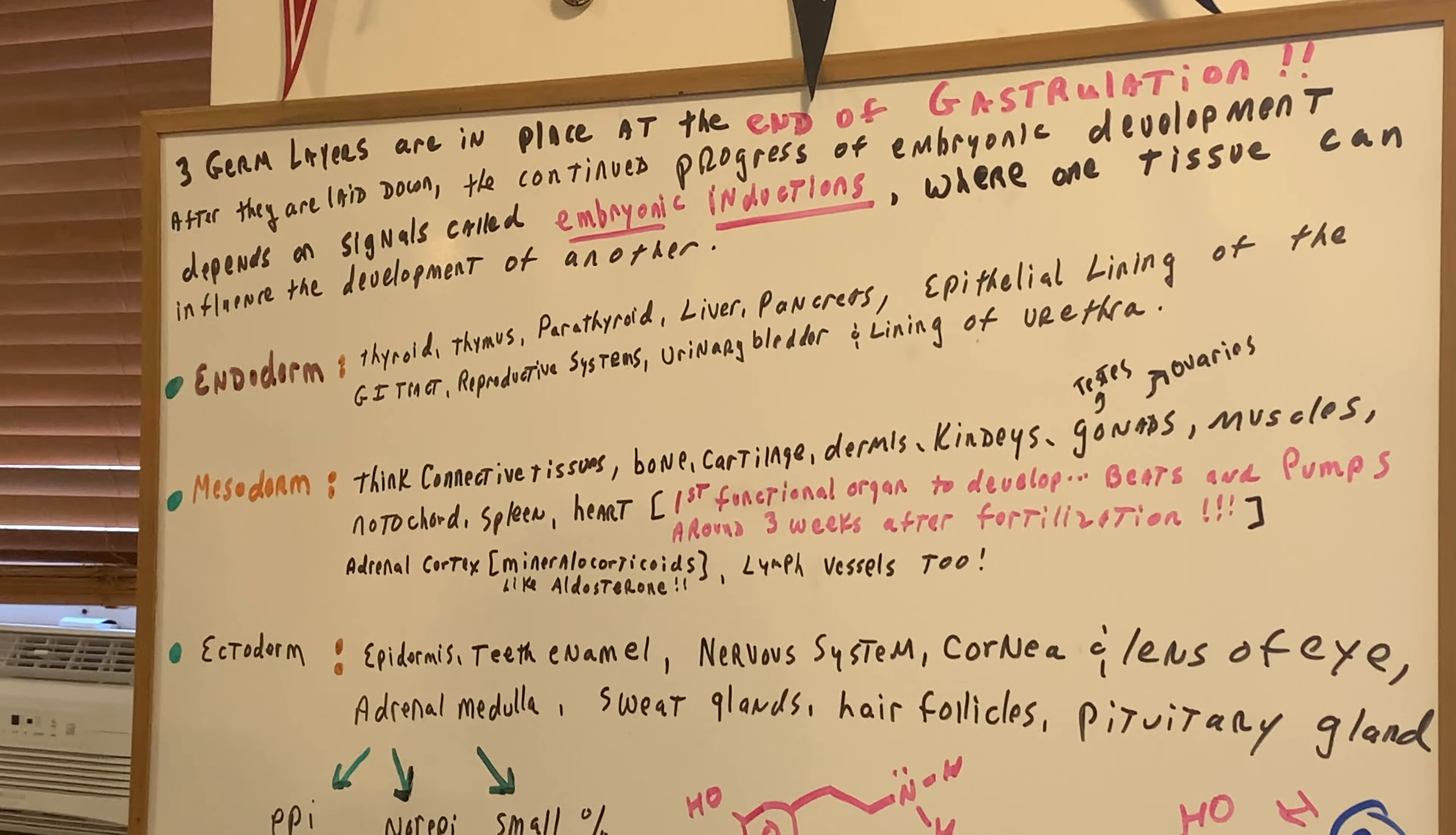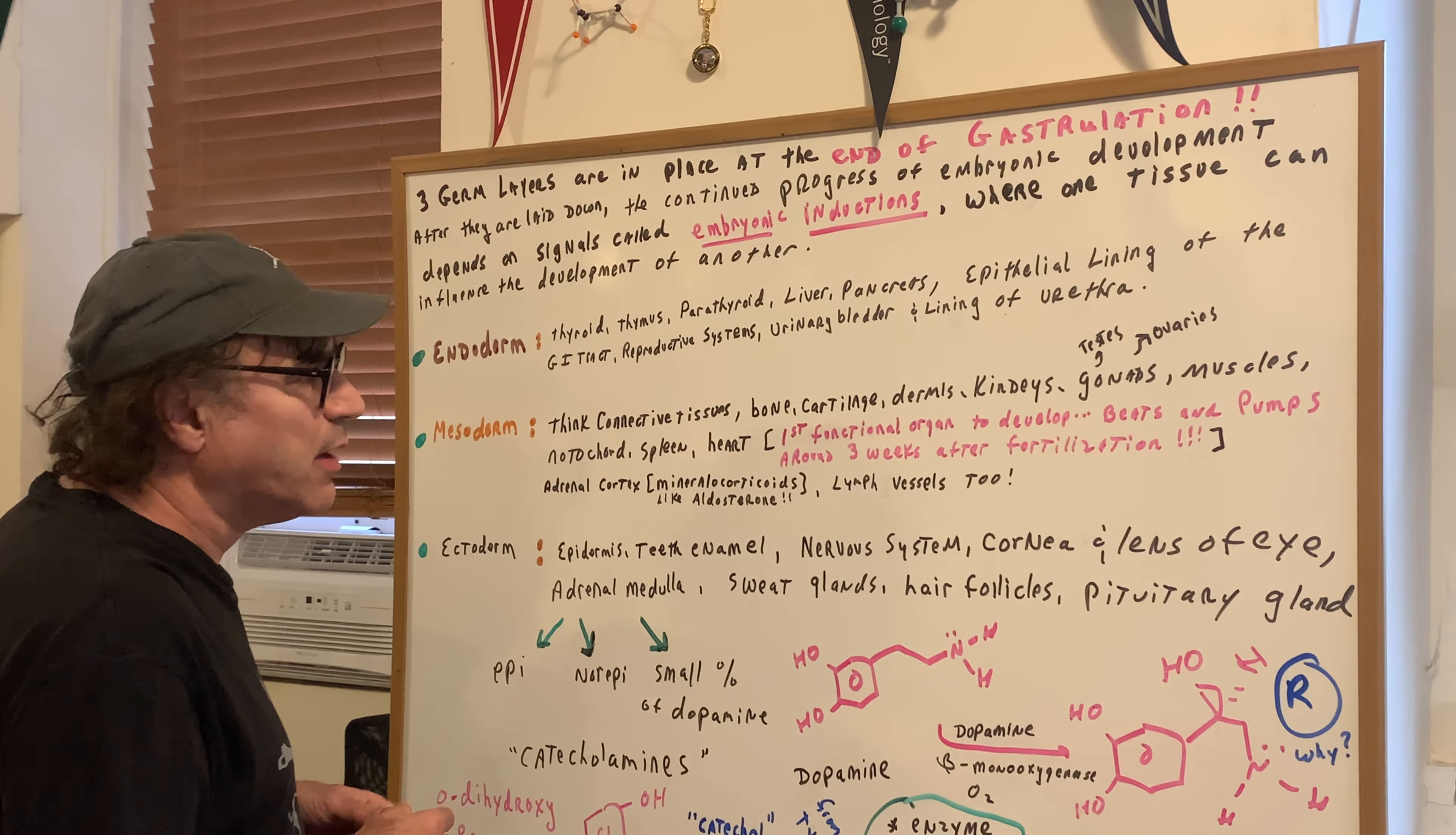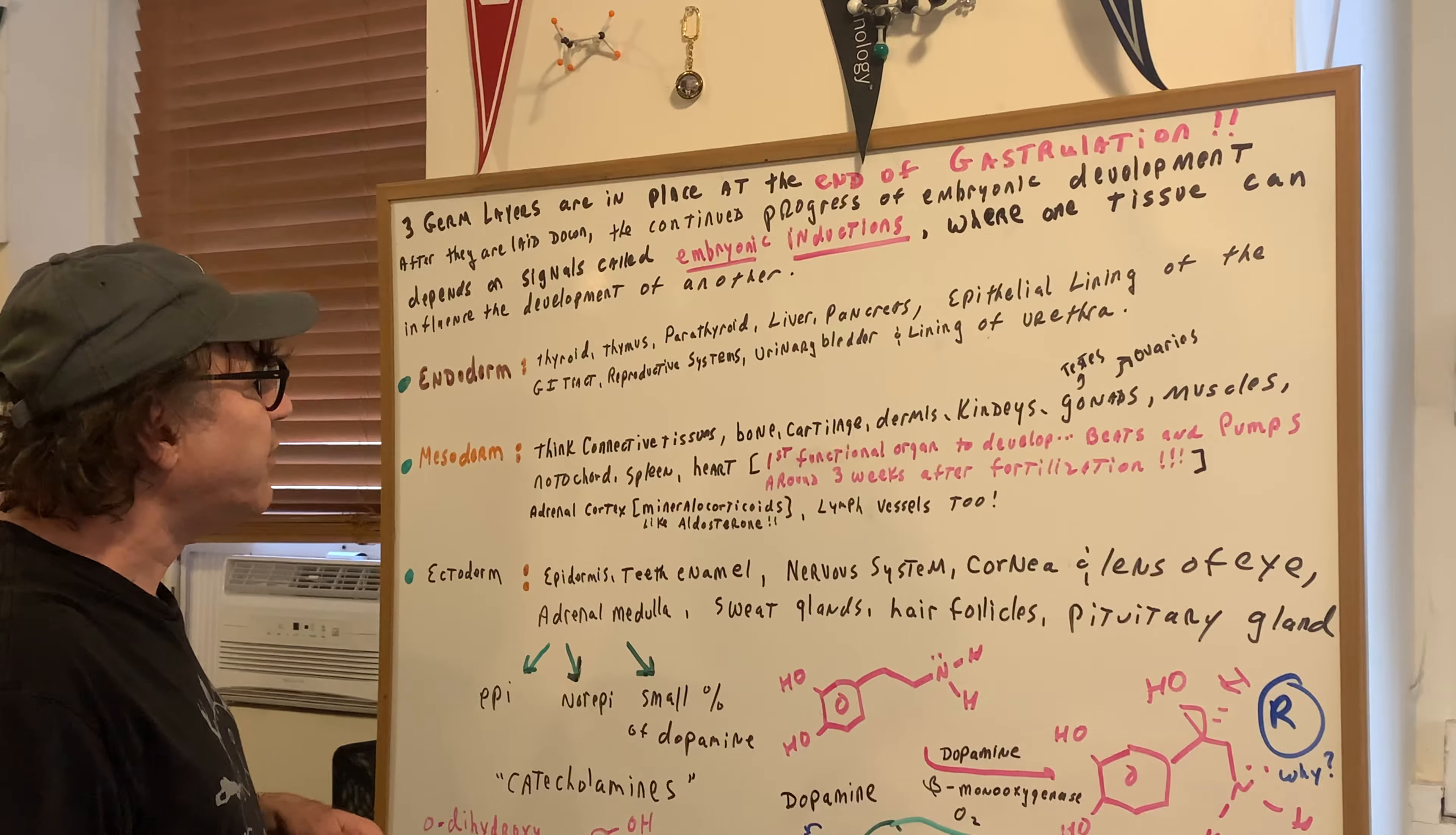The mesoderm, I want you to think connective tissues. It's a sure-bet question. Bone, cartilage, dermis, kidneys, gonads, which include the testes in the male and the ovaries in the female, includes muscles, the notochord, the spleen, the heart.